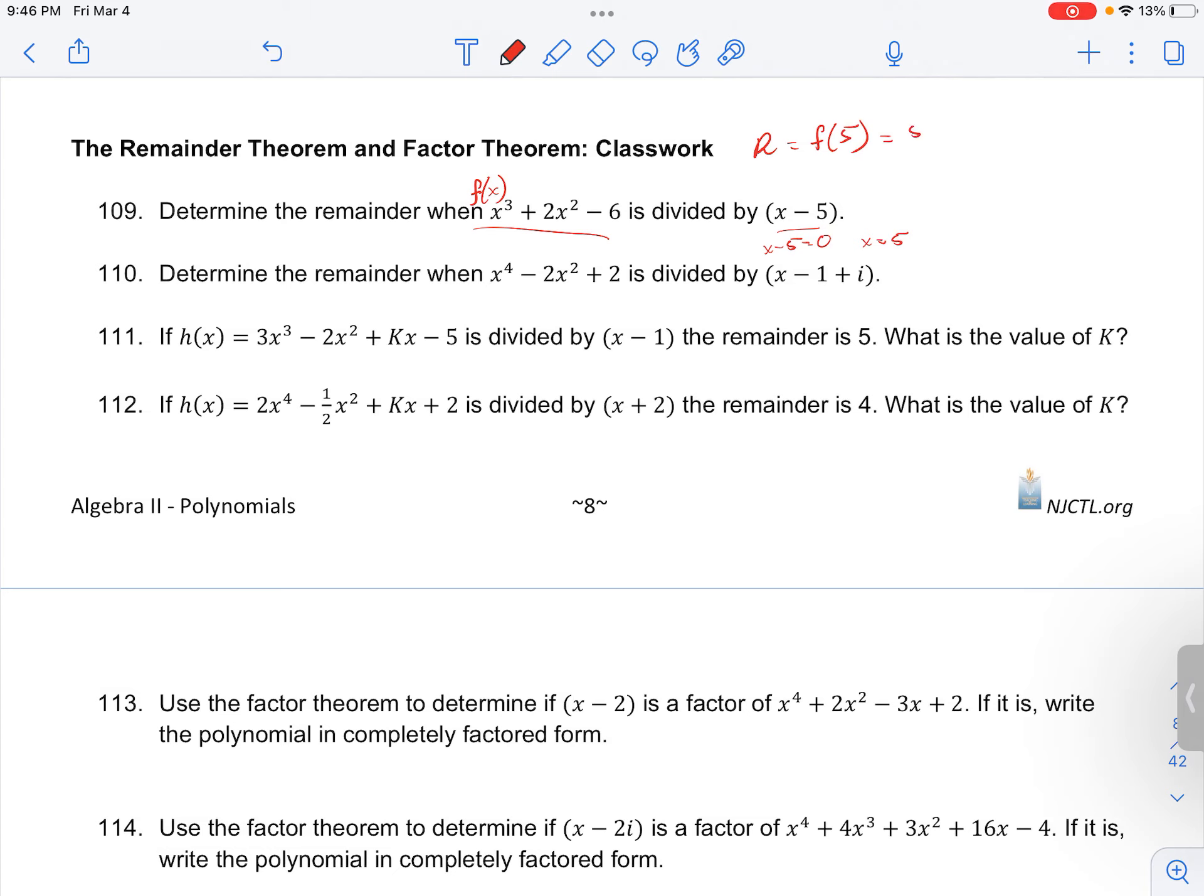This gives us 5³ + 2(5²) - 6, which equals 125 + 2(25), which is 50, minus 6. That's 175 minus 6, giving us 169 as the remainder.